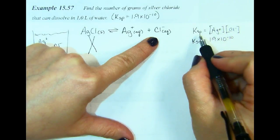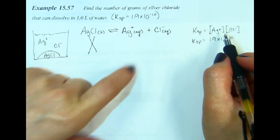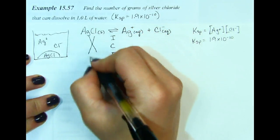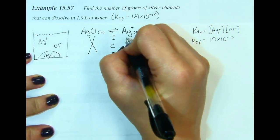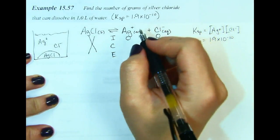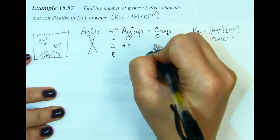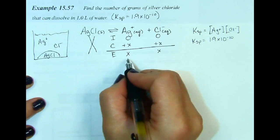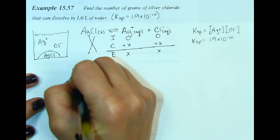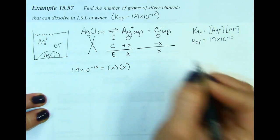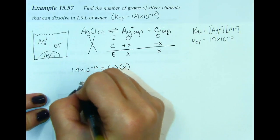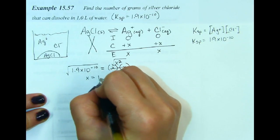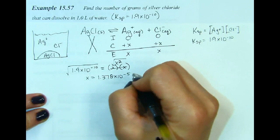It is really important to immediately write the law of mass action once you know your equation, so you can reference it and make sure you're plugging things in correctly. Drawing the ICE table — not including the solid — initially we have zero of both ions. The change is positive x, positive x, so at equilibrium both are x. Plugging into the law of mass action: 1.9 times 10 to the negative 10 equals x times x, which is x squared. Taking the square root of both sides gives x equal to 1.378 times 10 to the negative 5 molar.